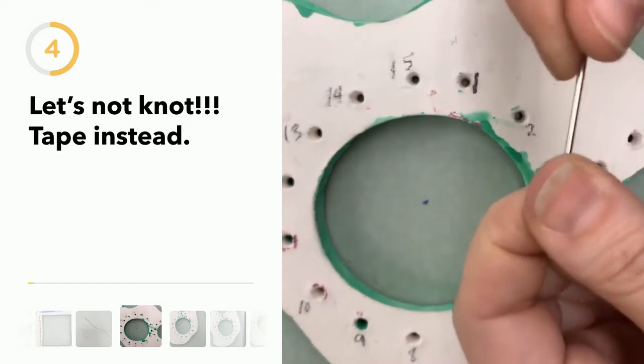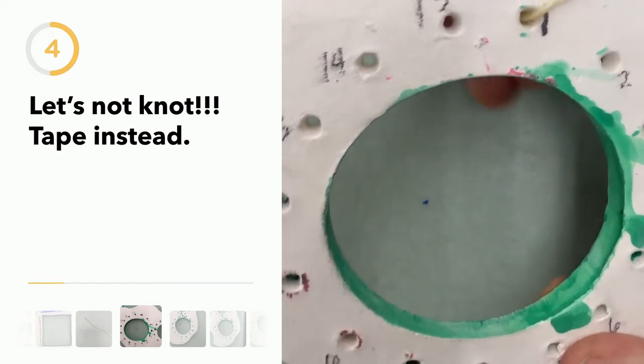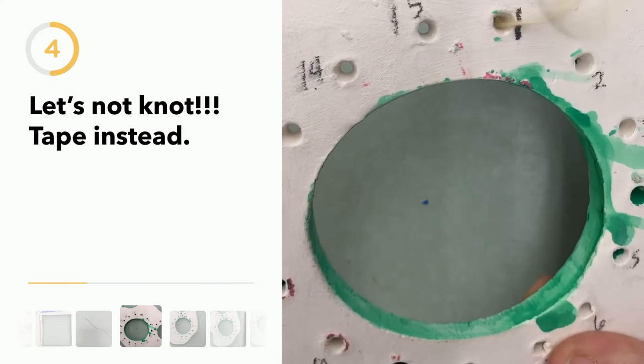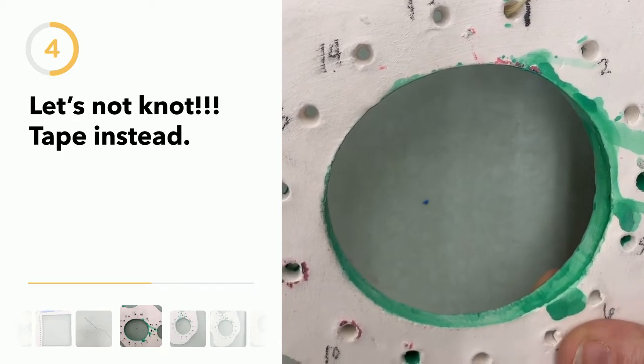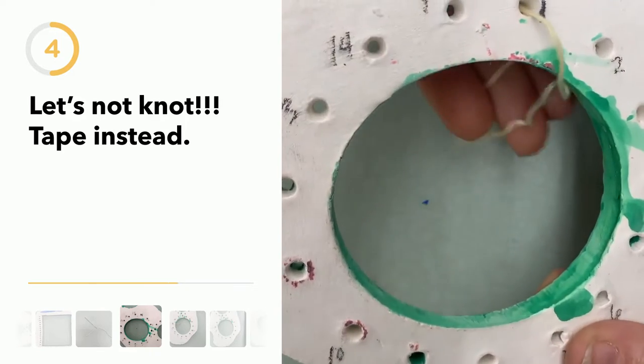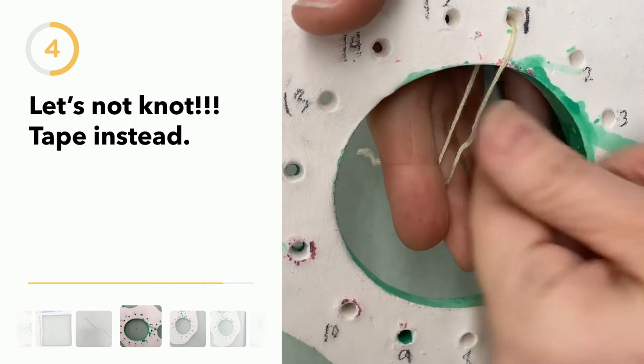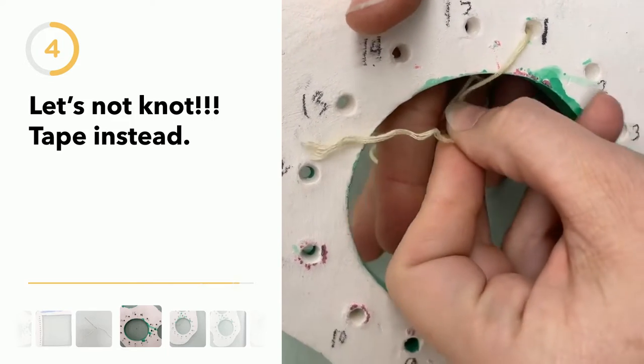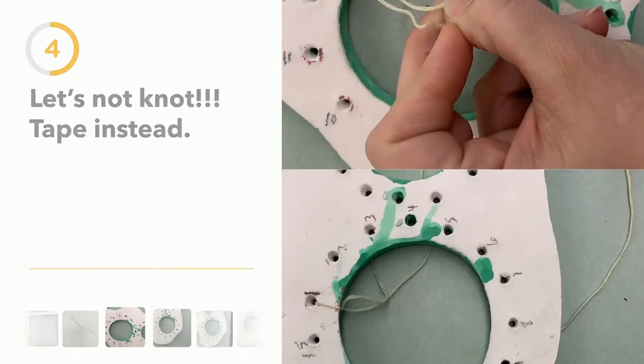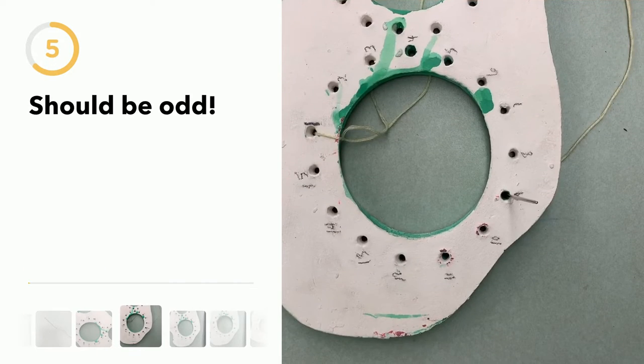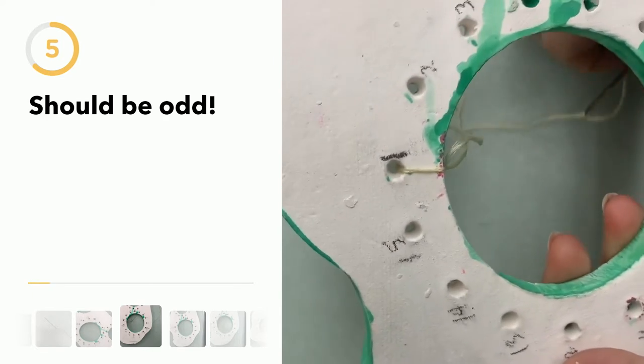So I have my threaded needle. Start at number one. You're going to go in through the back, pull it through, and then we're just going to tie a little knot. Make sure it's nice and tight. So just a regular knot. Alright, so got my knot.